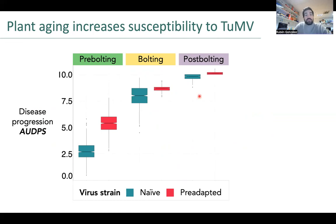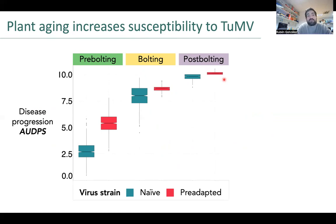And the older the host, the better the virus performed. So that means that plant age makes the host more susceptible to the virus.